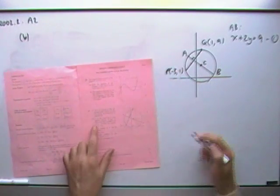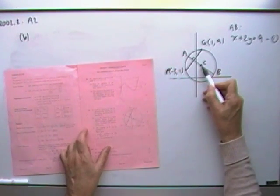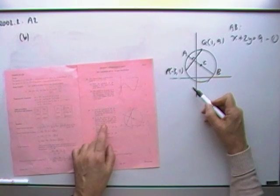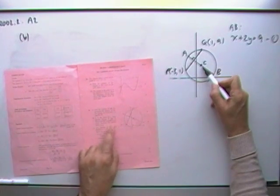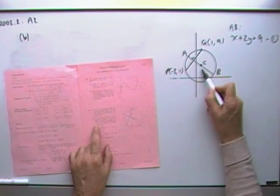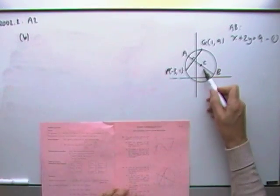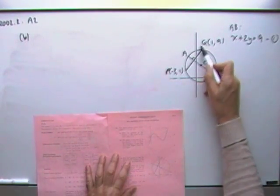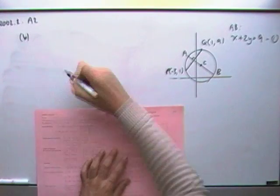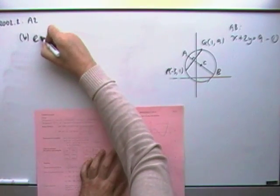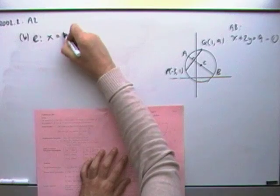Part B says c is the center of the circle passing through p and q, given that qc is parallel to the y-axis. It's the same as saying that qc is vertical. Determine the equation of the circle. All that means is that straight away you know one of the coordinates of c. If it's vertical, the x-coordinate must be 1.